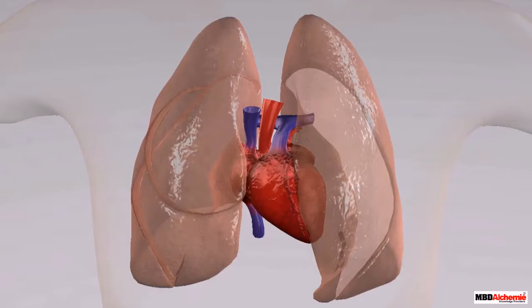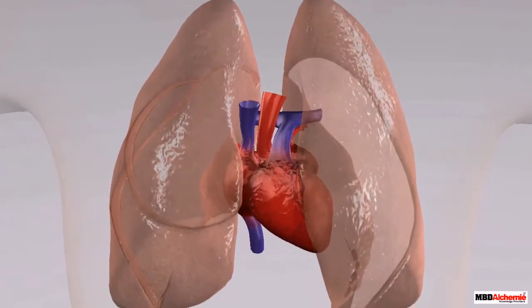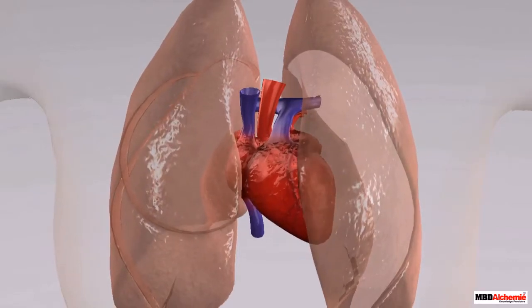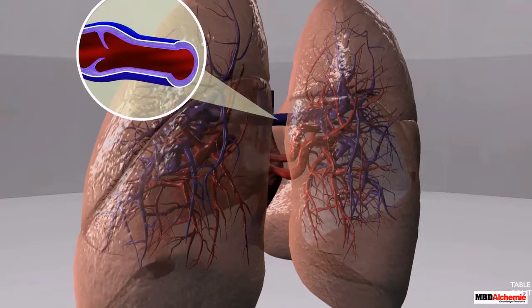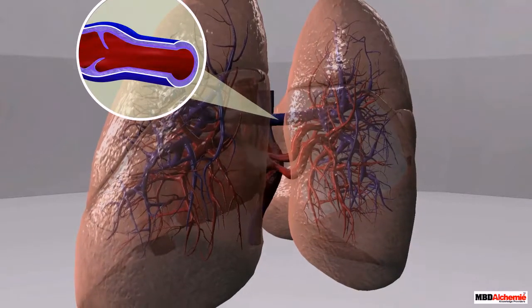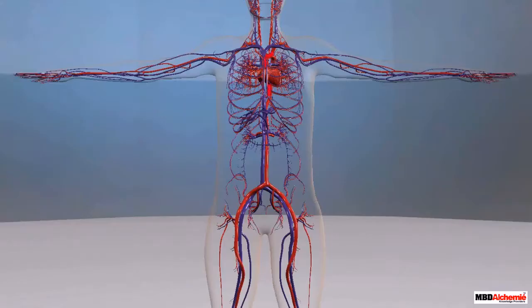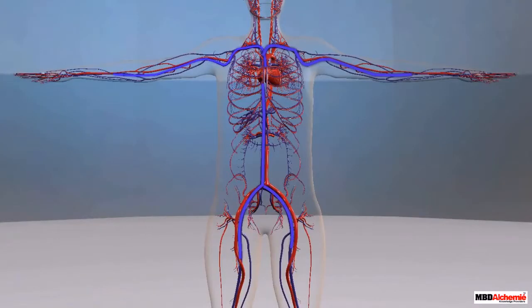Now that we know the basic structure of the heart, let us see how the heart pumps blood to the rest of the body. The heart first receives the oxygen-rich blood from the lungs with the help of pulmonary veins. The heart then supplies this blood to all the body parts with the help of arteries.